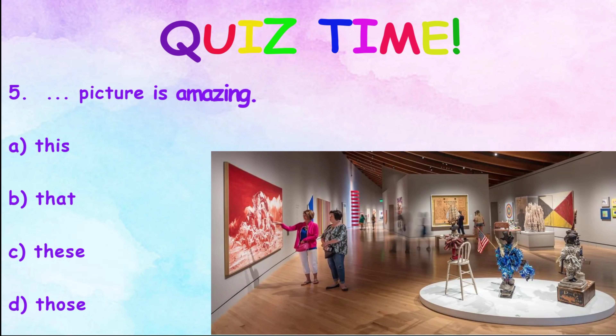Number 5: ___ picture is amazing. A. This. B. That. C. These. D. Those.